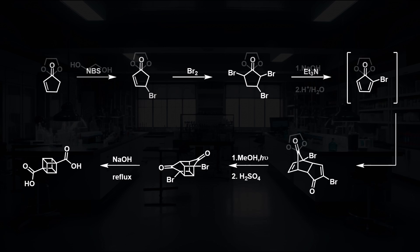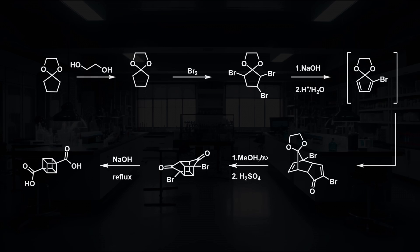This synthesis was improved by Chapman in England, when the initial steps were replaced using the bromination of the ethylene-ketal-protected form of cyclopentanone, with the following steps being essentially the same.